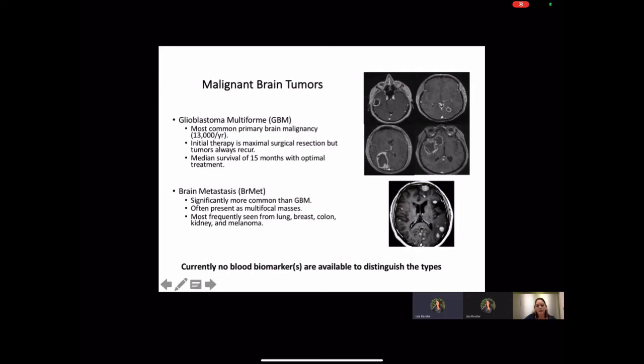Interestingly, some of these tumors have responded well to immunotherapy. These differences suggest that the immune mediated response may be different between glioblastoma and brain metastasis. Currently, there are no blood biomarkers available to distinguish the types of brain tumors.